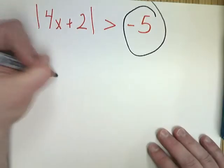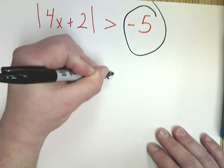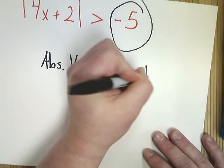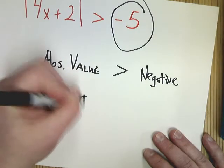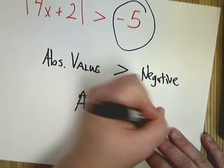So, if it's greater, so if the absolute value is greater than a negative, you get all real numbers.